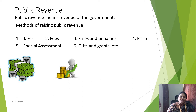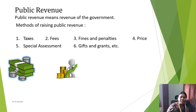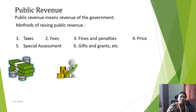There are six common methods of raising public revenue, namely taxes, fees, fines and penalties, price, special assessment, and gifts and grants. In general, the main source of public revenue is taxation and therefore we must derive a meaning of tax.